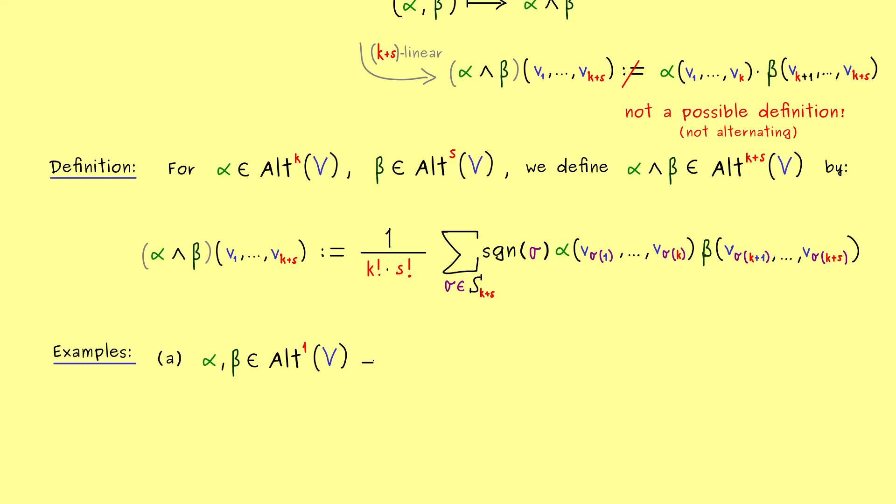Indeed, alternating does not change anything, because we only have one vector as an input. For this reason, Alt^1 is the same as V*, the dual space of V.